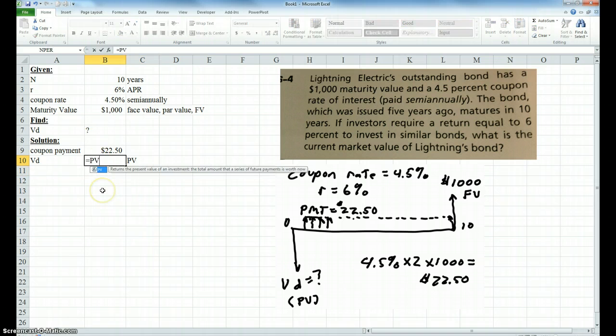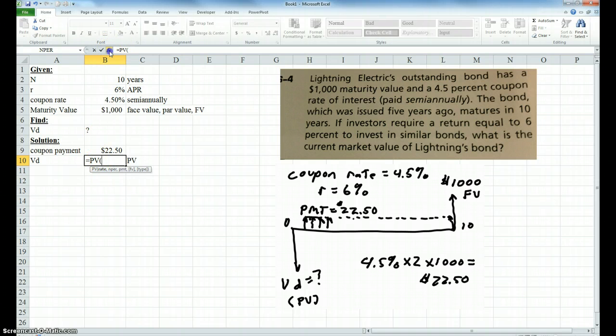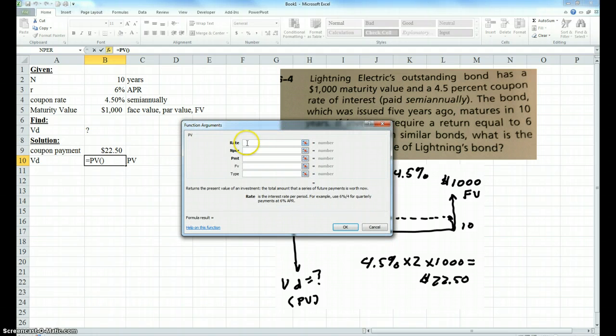So I'm going to go equals present value. I'm going to hit the parentheses. And it tells me here rate. I can click 6%. And remember, it's twice a year, so I've got to go divided by 2. Or if I want to do it an easier way, after I hit this opening parentheses, I can go here and it opens up this nice little box for me. I can go to the rate—the rate is 6%. And it says here for quarterly divided by 4, well, this is semi-annual, so I'm going to go divided by 2.